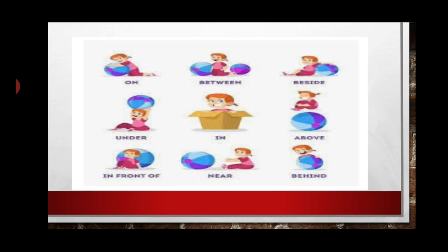The girl is near the ball, and the girl is behind the ball. All of these positions show us exactly where the girl is and where the ball or boxes are. So all these words are also called prepositions.